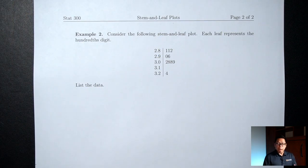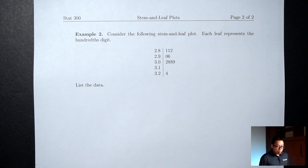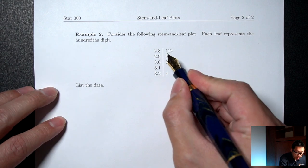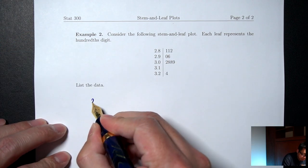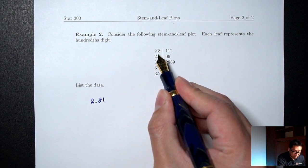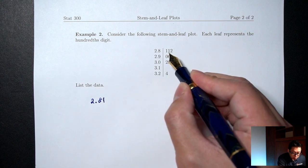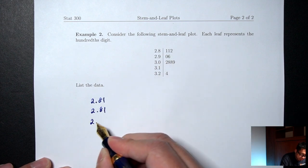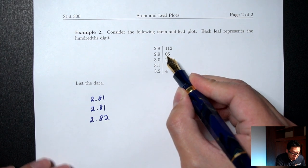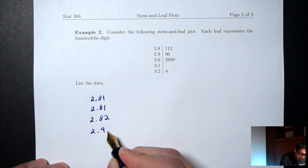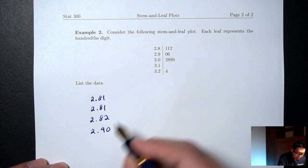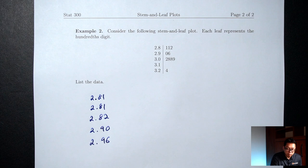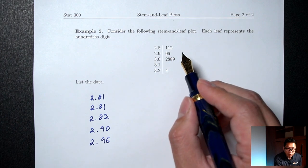The nice thing about a Stem and Leaf Plot is you can go backwards and get the original data. Here I have a Stem and Leaf Plot — let's go backwards and list out the original data. The stems on the left tell you the first part of your number, and each leaf represents the very last digit. So a stem of 2.8 with a leaf of 1 means 2.81. The next leaf of 1 represents another 2.81, the 2 represents 2.82.